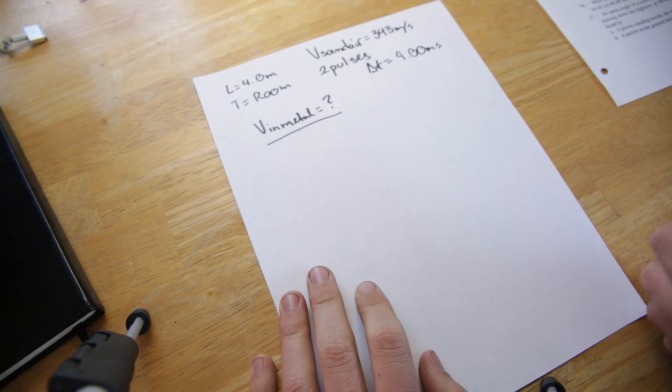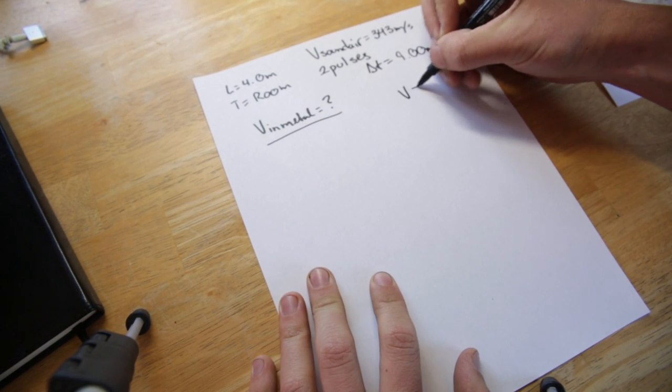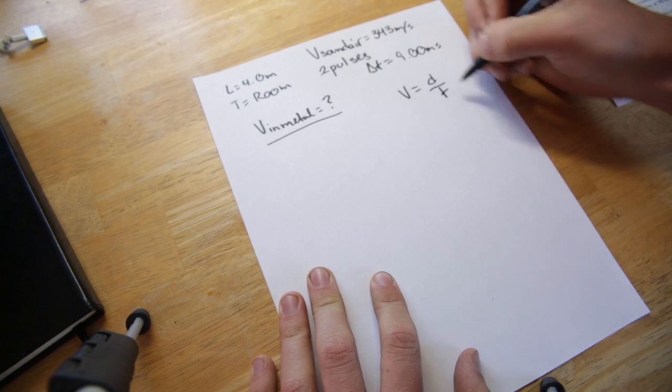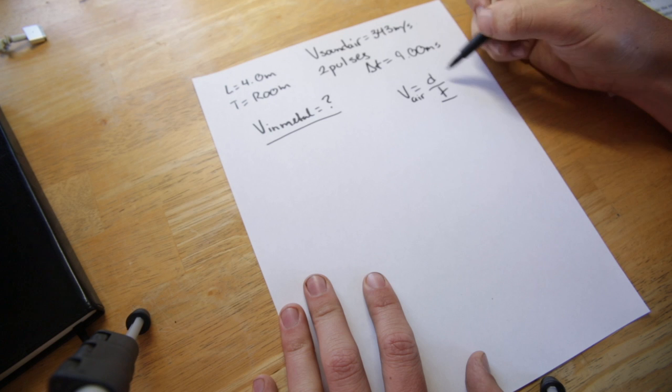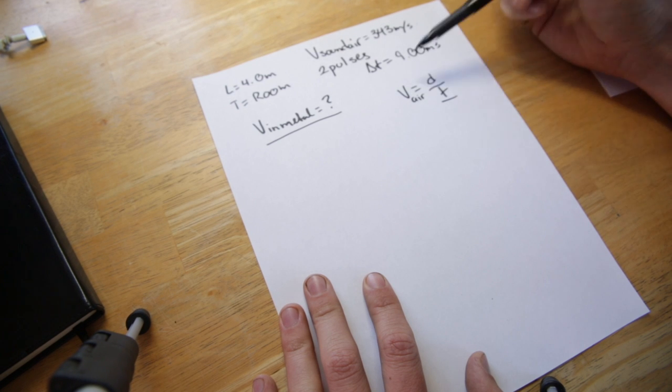So the equation for velocity is distance over time. So what we are going to want to do is try and figure out time for velocity in air given that we have a velocity constant as well as a distance.